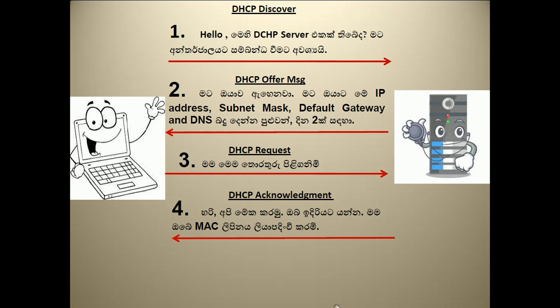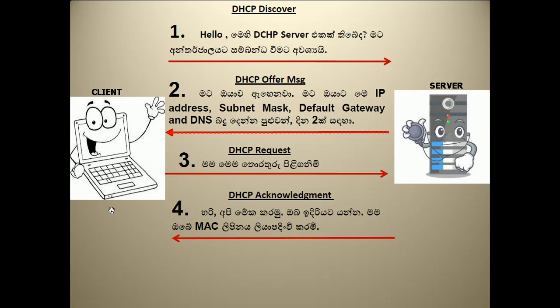We need to understand the DHCP client process. First, the client sends a broadcast message to the network — a DHCP Discover message — to find a DHCP server. The server then responds with a DHCP Offer message sent back to the client.